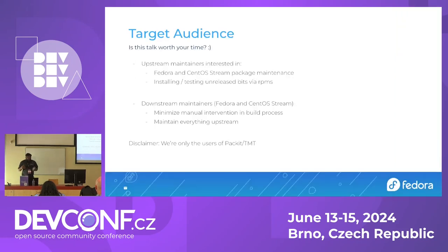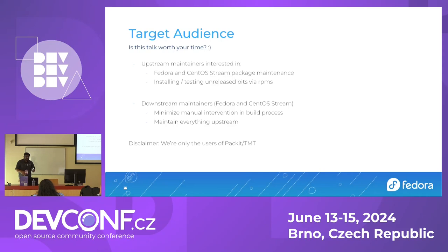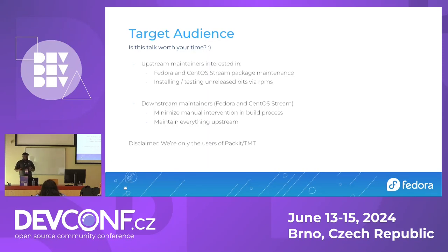The target audience is upstream maintainers of Fedora and CentOS Stream packages — those who have an upstream package and do downstream maintenance of that package, as well as testing the latest bits, even unreleased ones. Also for downstream maintainers who want to automate their build process, and those who want a single source of truth — everything in one place upstream for tests, spec files, and other packaging needs.